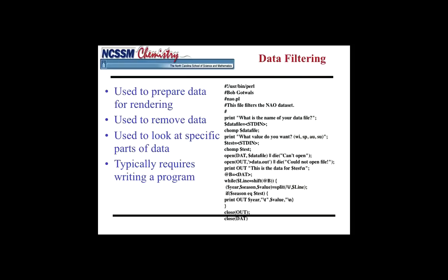So here's an example of a program that I wrote a number of years ago. This is for an atmospheric data set. And what you should see here, if you look about a third of the way down, you'll see the words, what value do you want, and it says the options WI, SP, AU, and SU. And what the user types in there is winter, spring, autumn, or summer. And once you do that, once the user does that, it takes the entire data set and only chooses those values that are related to winter, spring, autumn, or summer. So that's a data filtering. In this case, we're filtering out data by the season of the year.